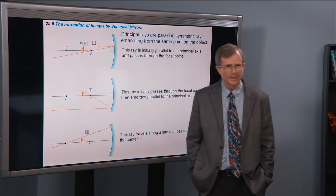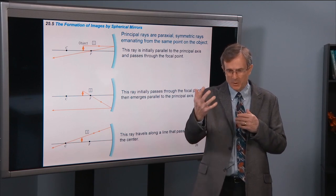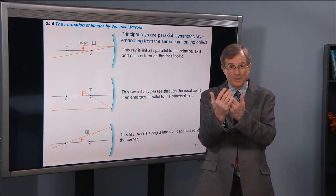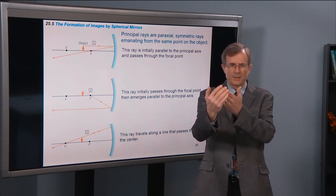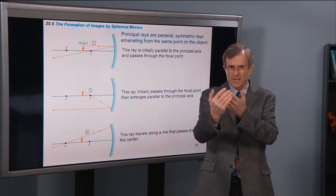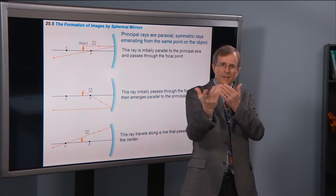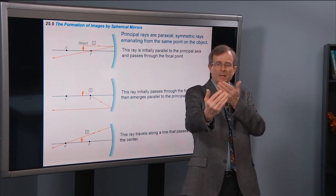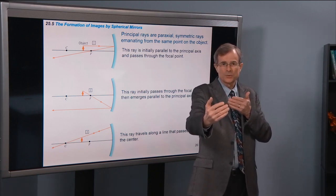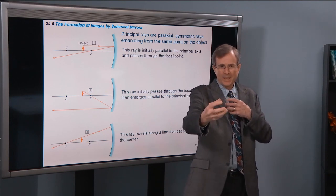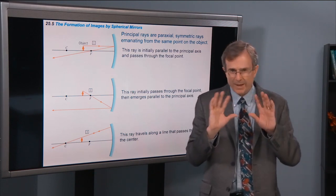These two demonstrations help you remember all the different positions. When my face was up close to the concave mirror, the image was upright, virtual, and slightly magnified. As I moved the face or ball further from the mirror, the image got bigger and more magnified, but still upright and virtual. At the focal point the image was enormous. Beyond the focal point, the image inverted — turned upside down — and got smaller and smaller. At the center of curvature, the image was equal in size to the object, though inverted. Continuing further back, the object remained inverted and got smaller and smaller.